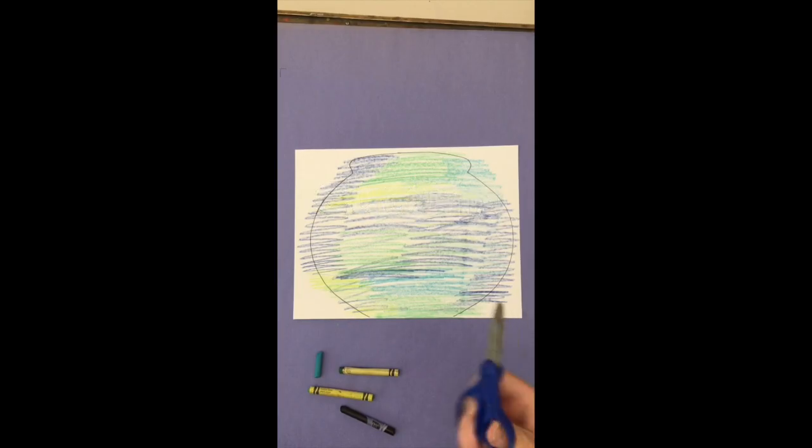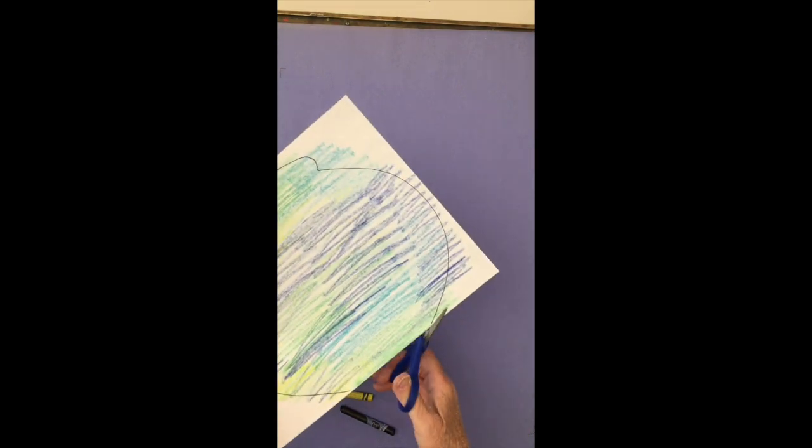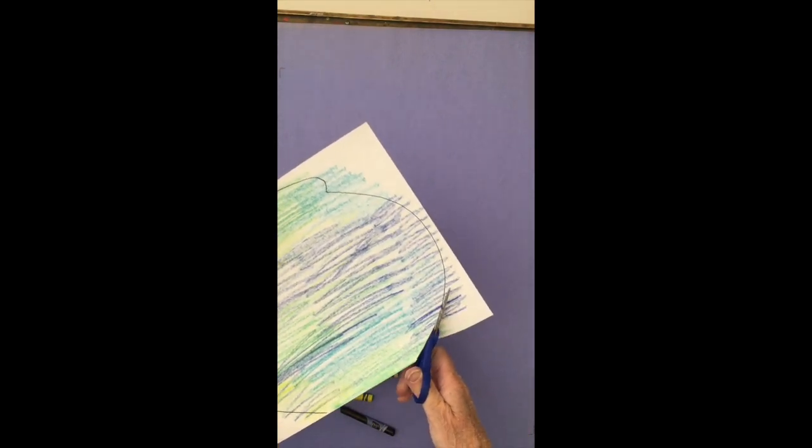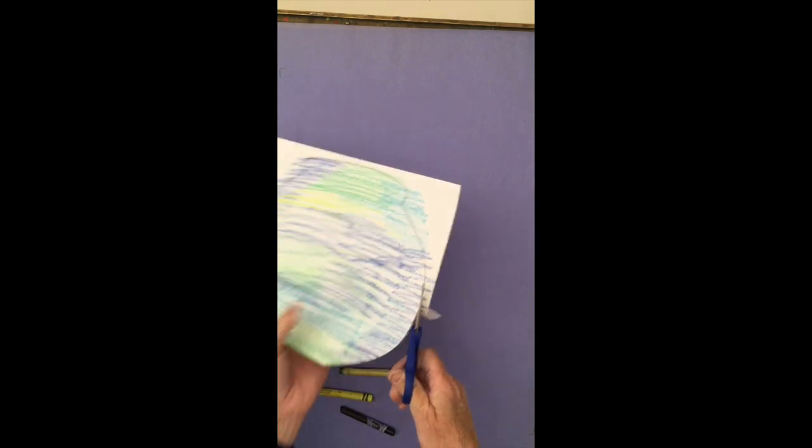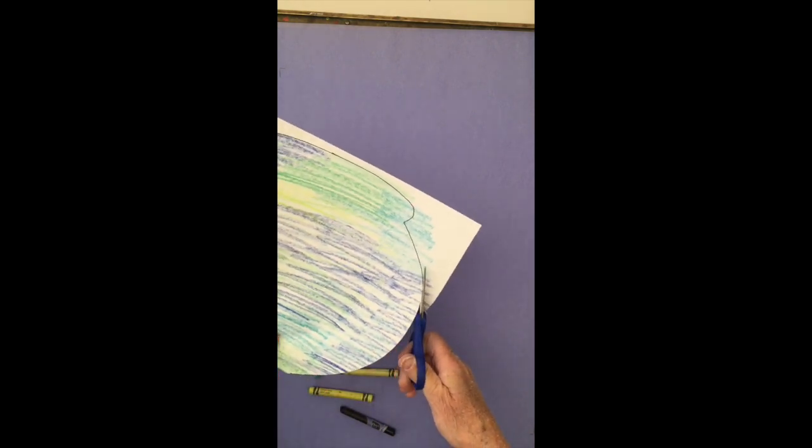I'll get my scissors and begin cutting. Again I want to go slowly. There's no rush. My helping hand is moving the paper and my scissor hand is cutting along the line.